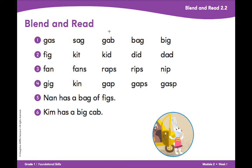Now let's look at the words in the fourth row. Read them with me. Gig, kin, gap, gaps, gasp.